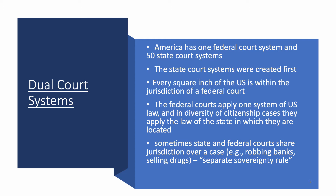We have one federal court system that covers every square inch of the United States. There is not one square inch of the U.S. that is not within the jurisdiction of some federal court. But we also have 50 state court systems — Illinois, Indiana, Wisconsin, etc. — each with its own court system. So how can you have two court systems in the same area? I'm going to explain that.